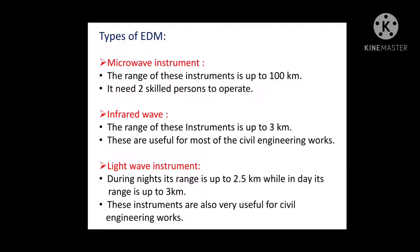Light wave instruments rely on the propagation of modulated light waves. This type of instrument was first developed in Sweden and was named the Geodimeter. During night, its range is up to 2.5 kilometers, while during the day its range is up to 3 kilometers. The accuracy of these instruments varies from 0.5 mm to 5 mm per kilometer distance.